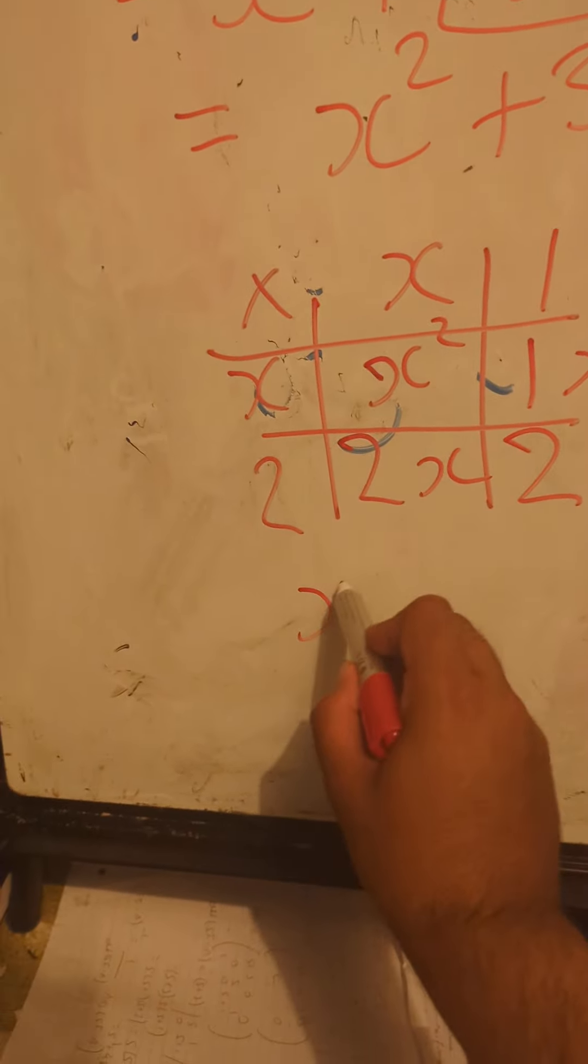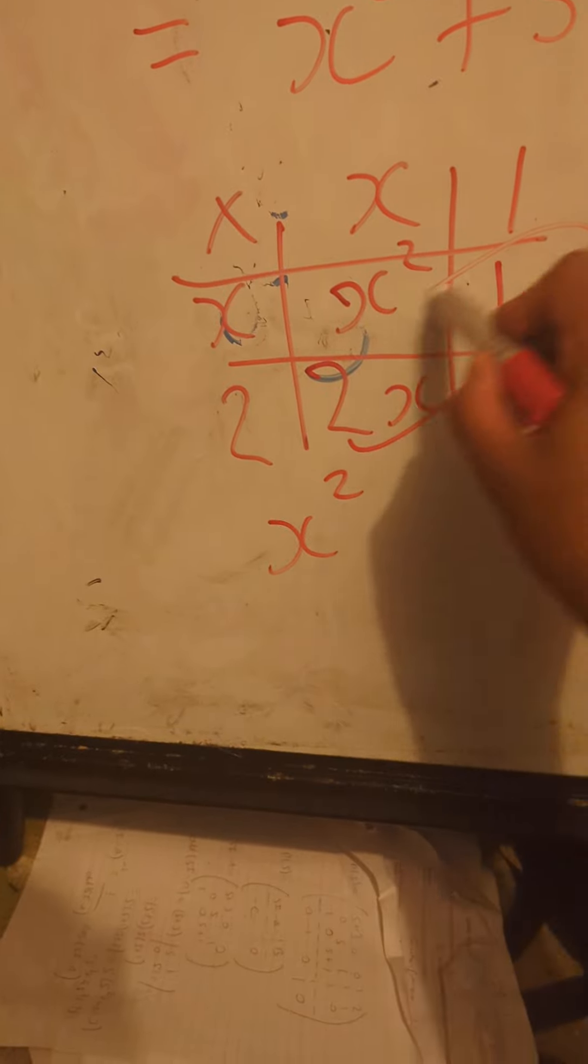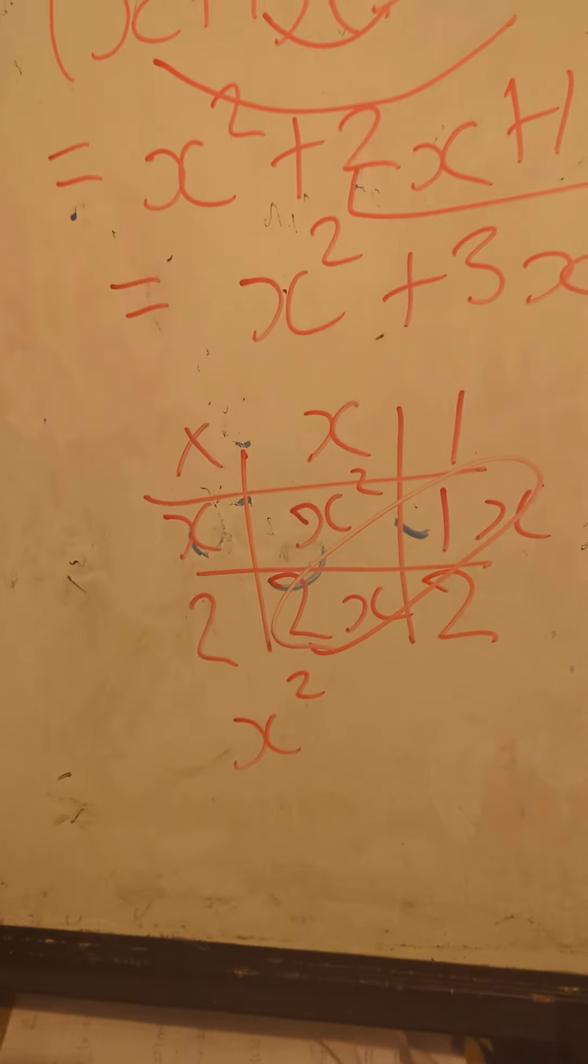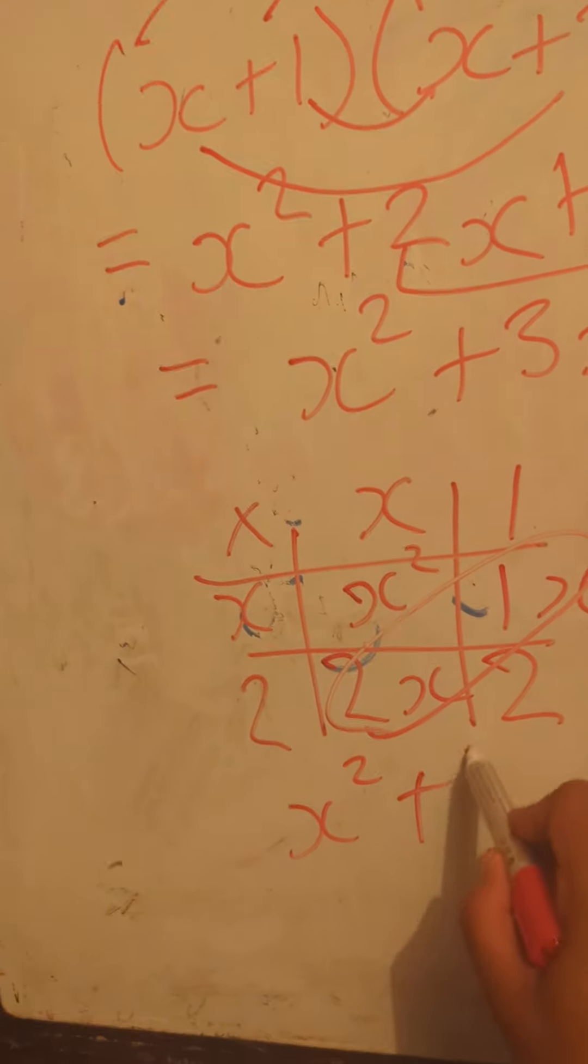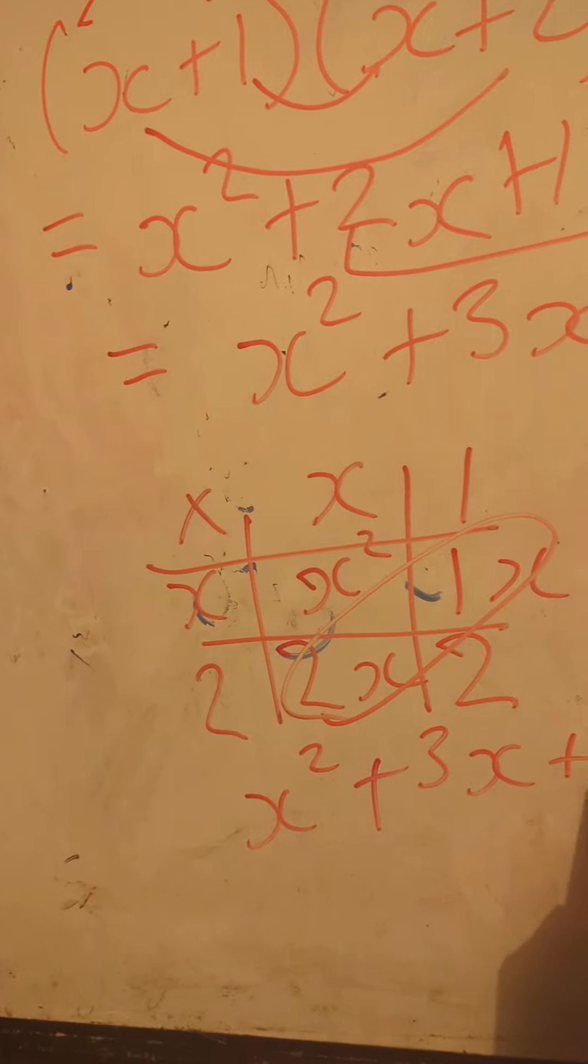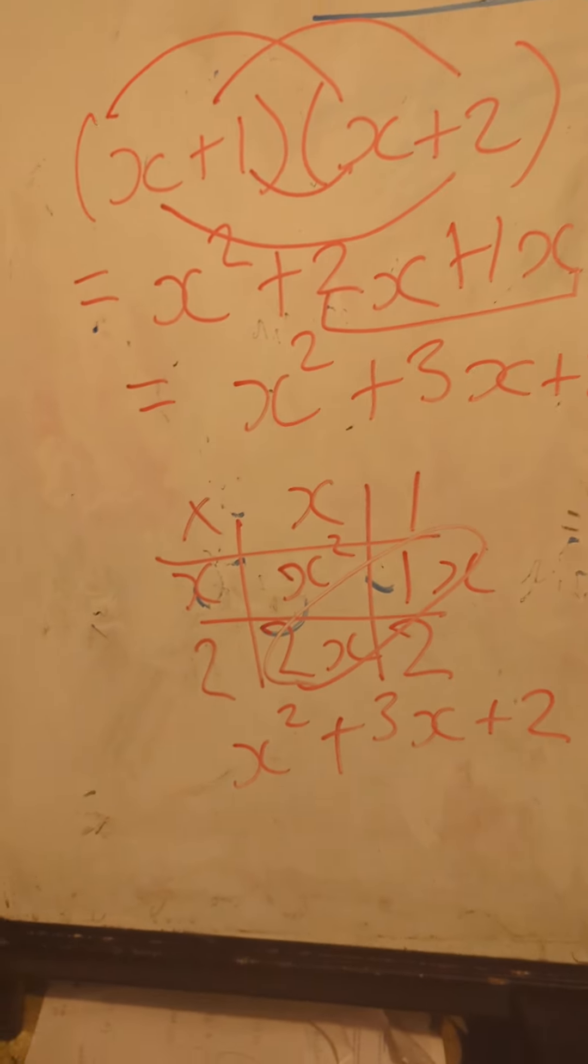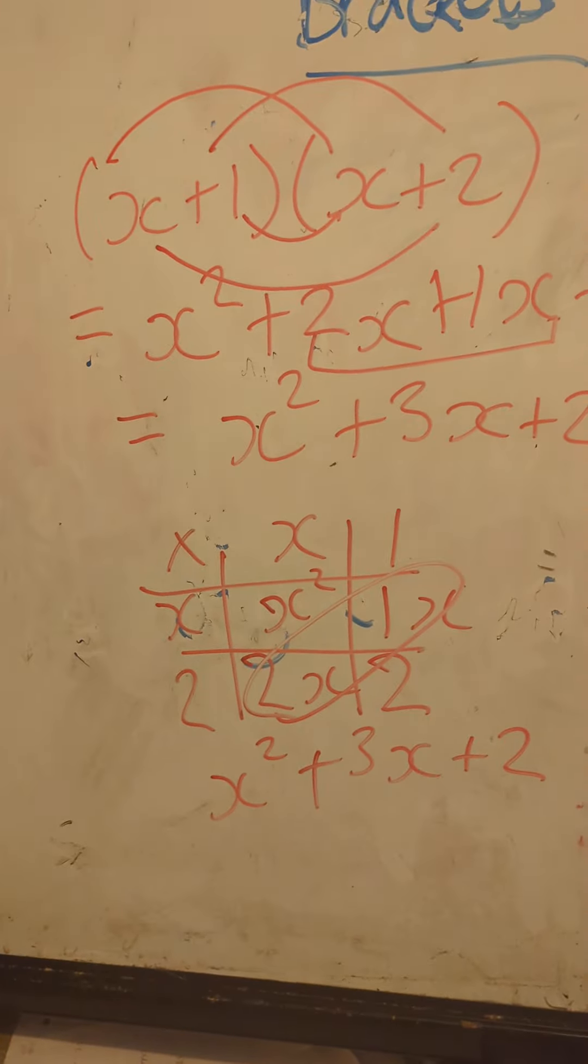So collecting terms: x squared, this simplifies to just 3x, plus 3x plus 2. And that's how to do it via the grid method. Hopefully that makes sense.